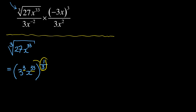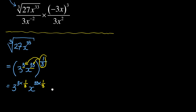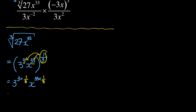At this stage you take that one-third exponent and distribute it, multiplying across. Using the laws of exponents you'll have 3³ times one-third, and x to the power of 33 times one-third. You can see how this scenario simplifies: 3 into 3 cancels to 1, and 3 into 33 is 11. So the cube root part simplifies to 3x to the power of 11.